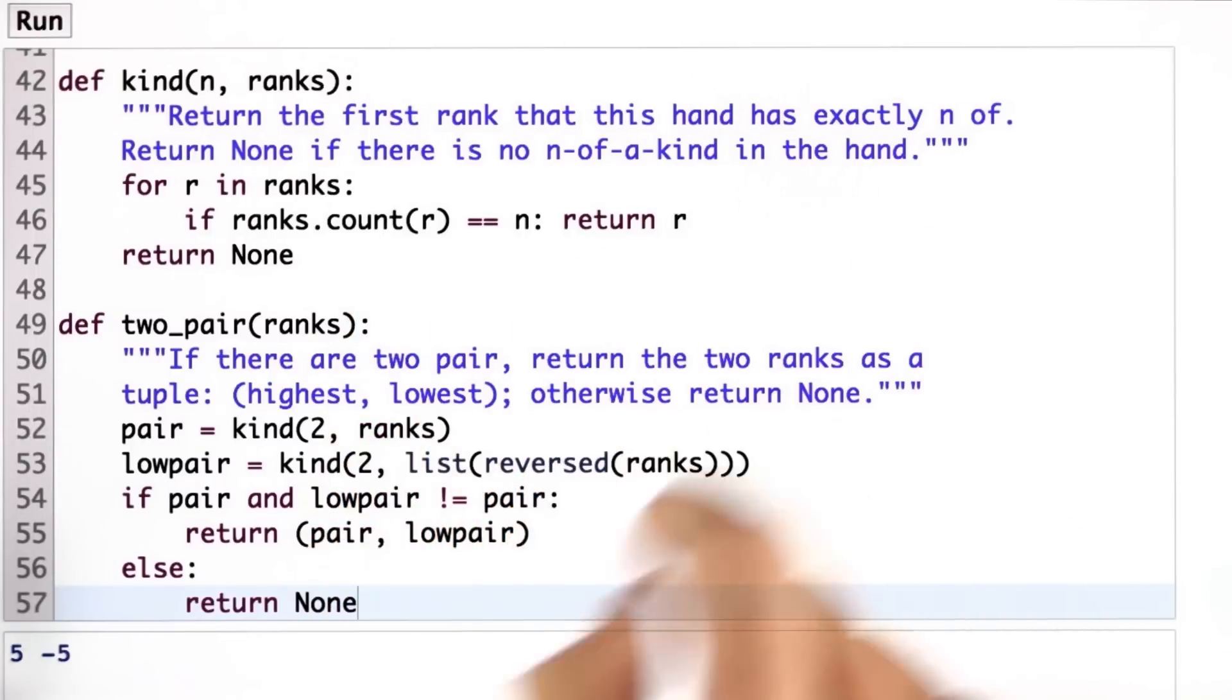So if I'm going through the ranks from left to right, I should hit the highest one first. And then to find if there's a low pair, what I've done is reverse the ranks and then look through those. So now I'm going from lowest to highest and I should find the lowest pair first.